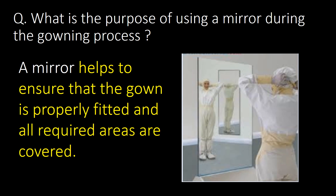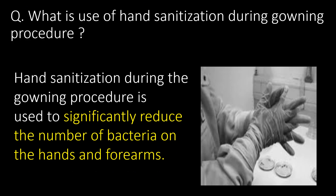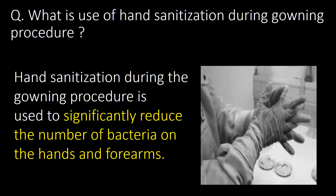What is the purpose of using a mirror during the gowning process? A mirror helps to ensure that the gown is properly fitted and all required areas are covered. What is the use of hand sanitization during the gowning procedure? Hand sanitization during the gowning procedure is used to significantly reduce the number of bacteria on hands and forearms.